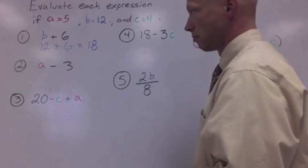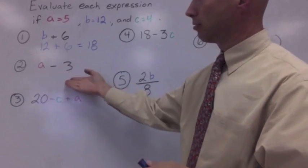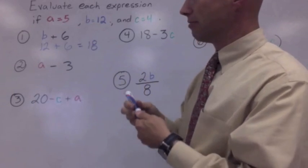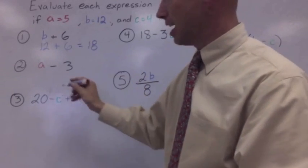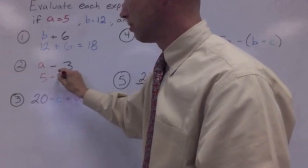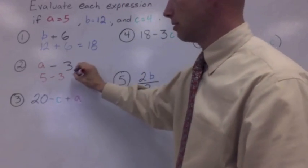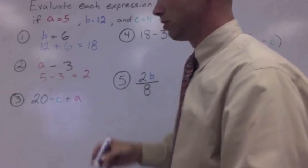Number two, A minus three. I've made that red. We can see from the directions that A equals five. We just put five in the place of A, five minus three. I might need my calculator for this. I might not, but five minus three is two.